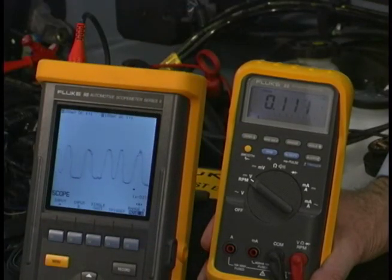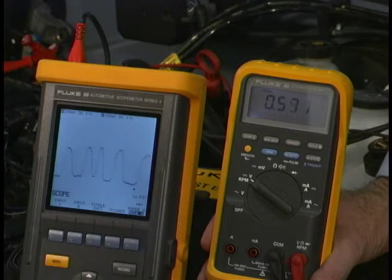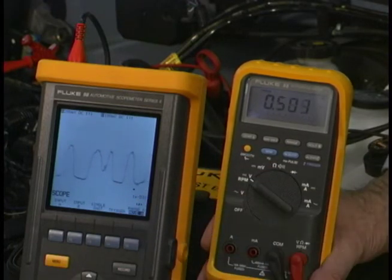I've connected the Fluke 88 and the Fluke 98 to the same signal. It's an oxygen sensor. You can see the transition of the signal on the screen on the Fluke 98.